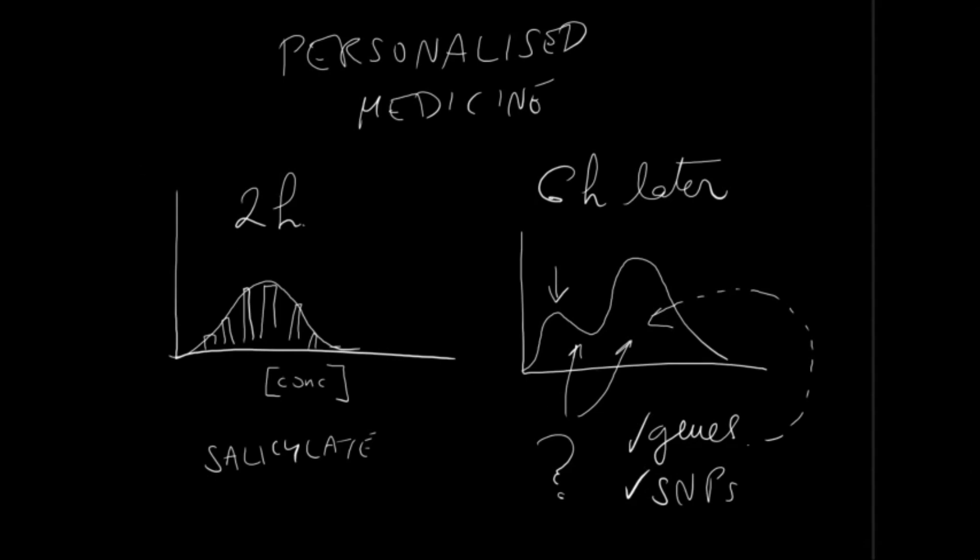If we knew what these were, perhaps we could predict the effects of drugs. Why is that important? A lot of the times it isn't, but with drugs like warfarin, where if it's too low, no effect and the patient bleeds, or if it's too high, it can actually kill you.